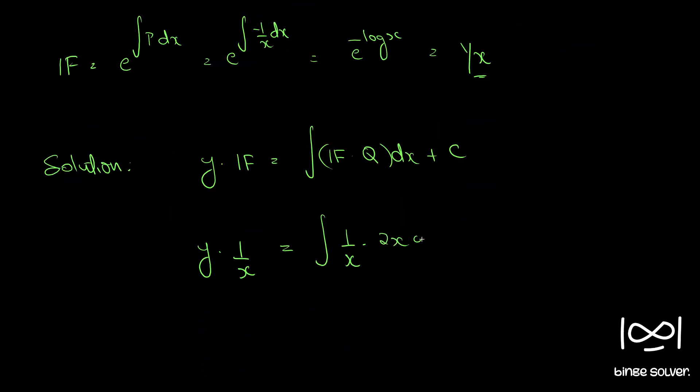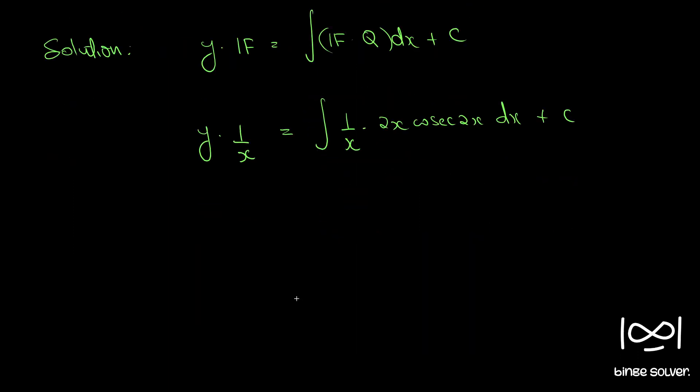q is 2x cosec 2x dx plus c. So we have y by x is equal to, and x cancels. We have integral 2 cosec 2x, so we can write 2 by sine 2x instead, dx plus c.